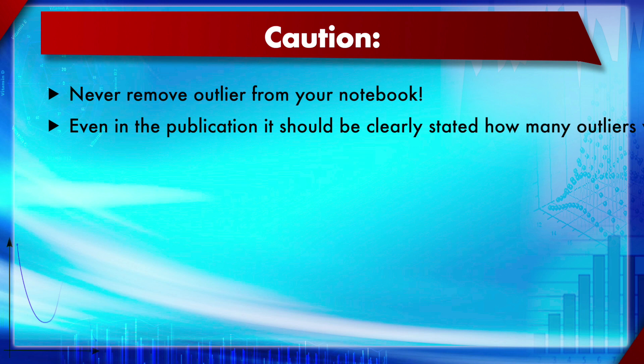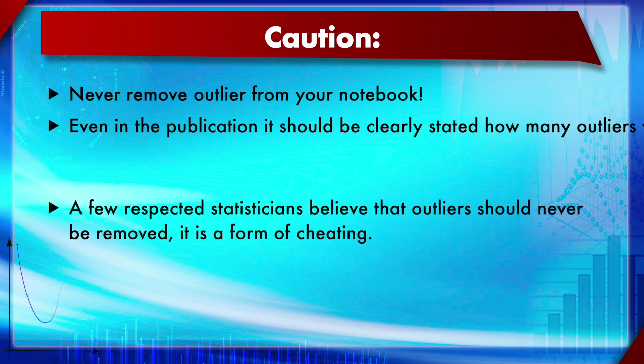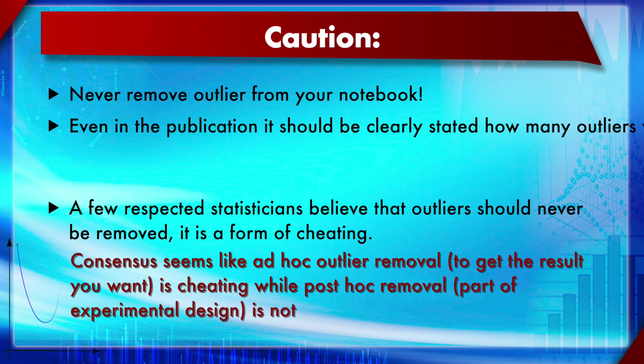If you used tests like Grubbs test or the ROUT method, you must clearly specify which methods were used and how many outliers were removed. Not doing so is a kind of cheating. Some respected statisticians believe outliers should never be removed at all — there is no complete agreement among well-respected statisticians on this point.